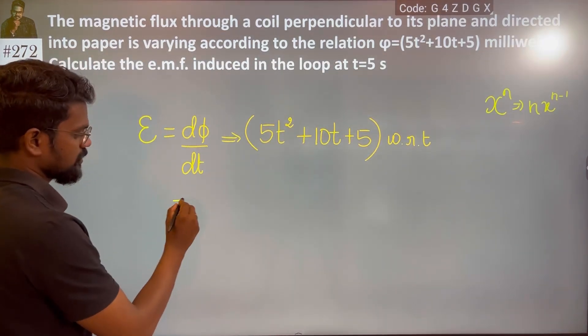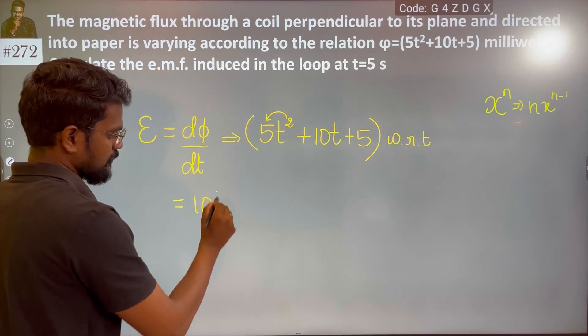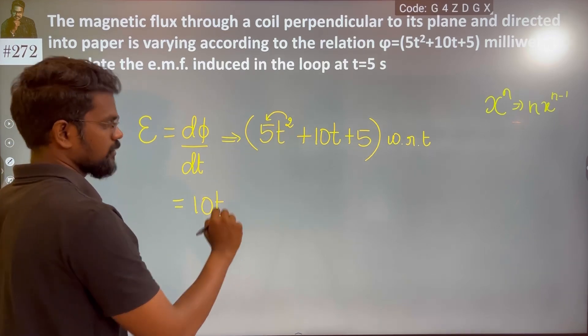So I am going to differentiate this equation. Then 2 times 5t to the power 2 minus 1, which is 10t to the power 1. Right.